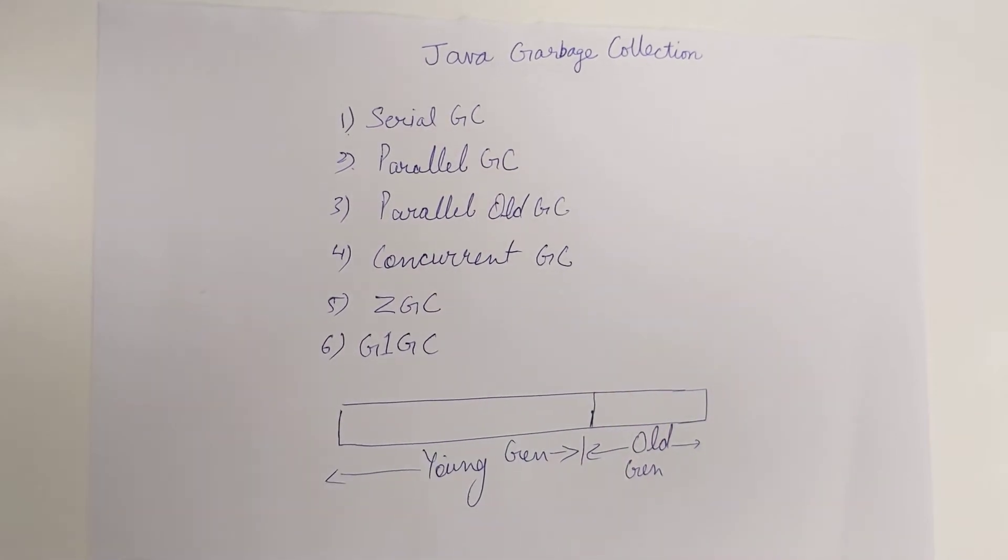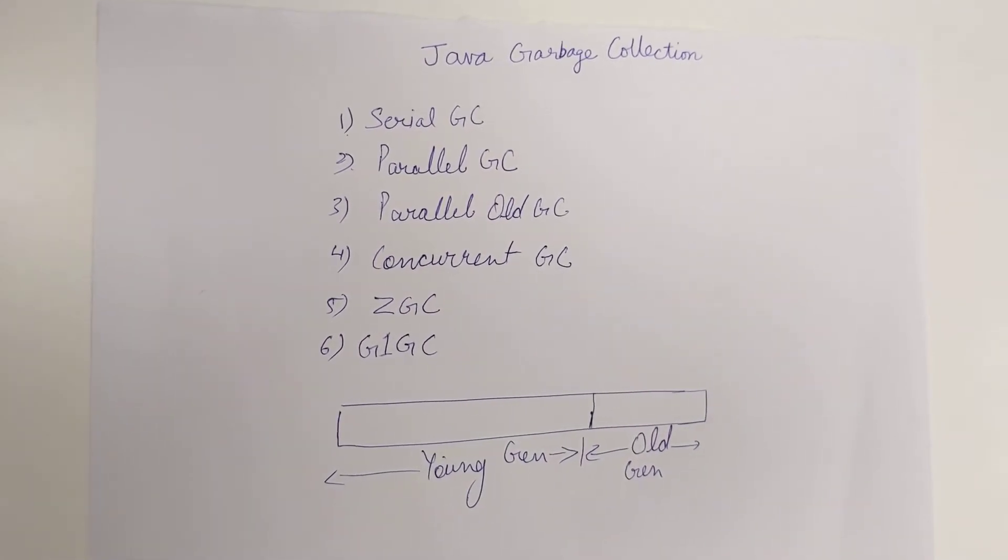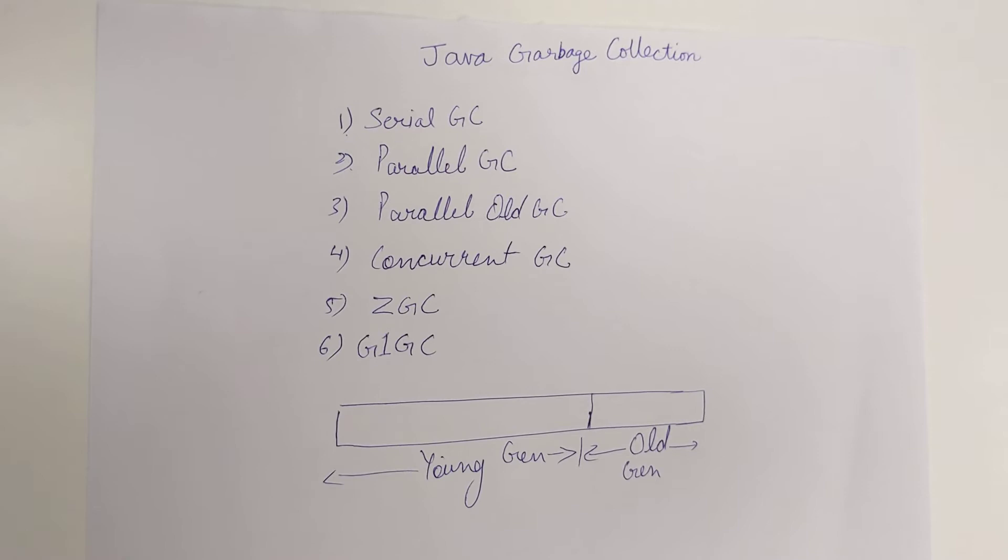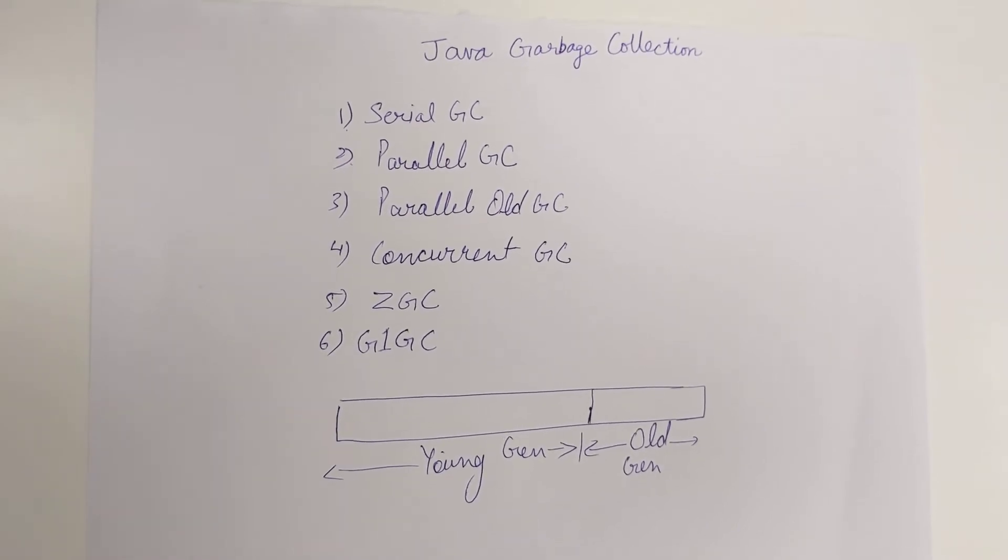Serial GC is single-threaded. A single thread will run and do the garbage collection job.